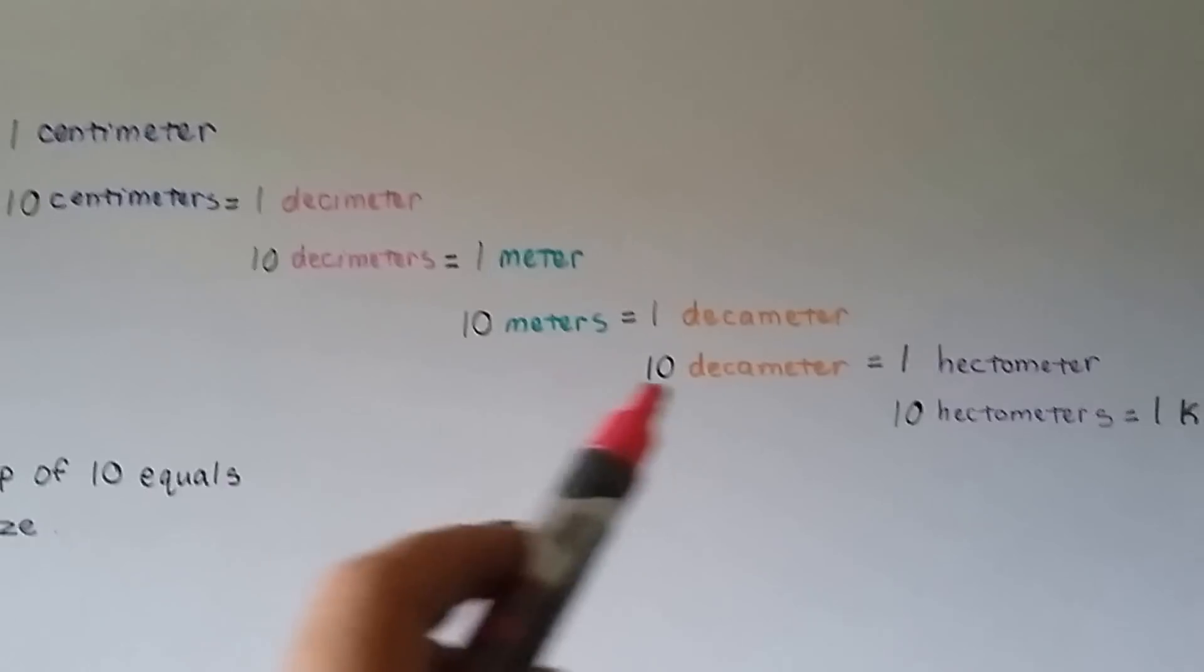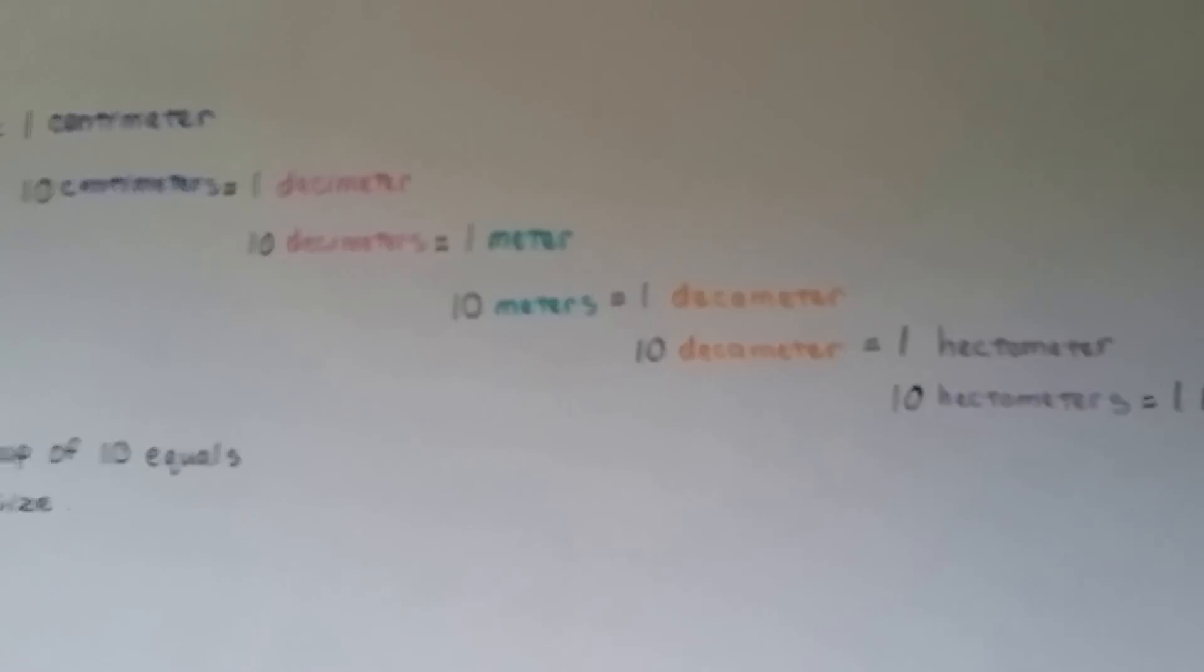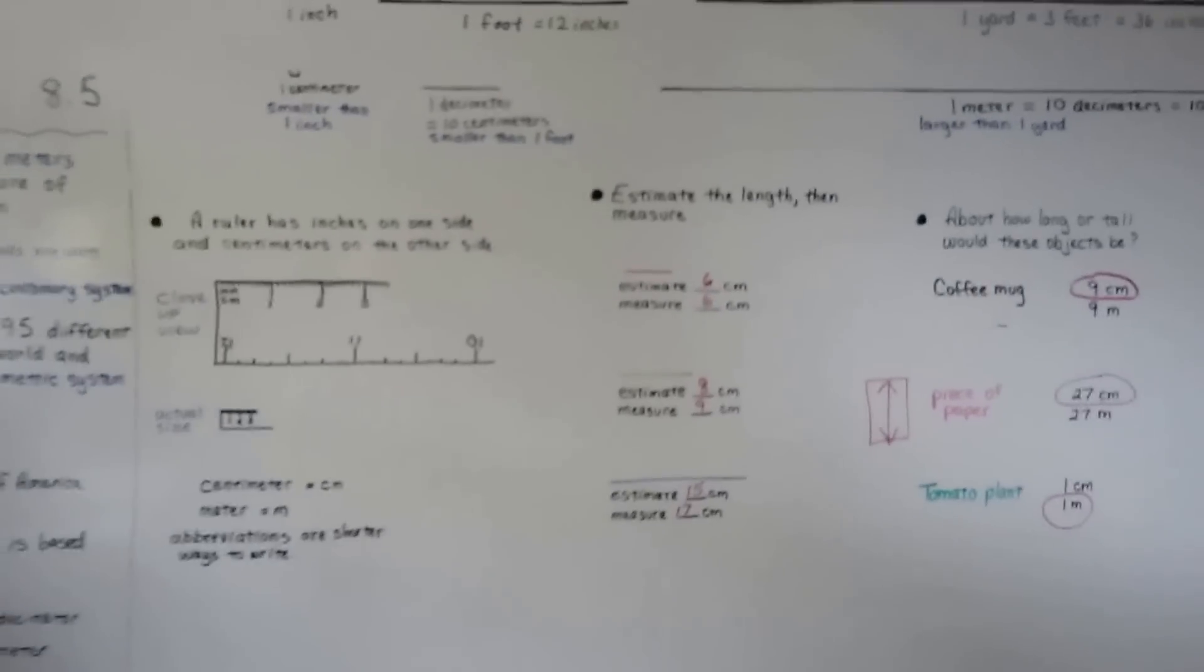See how it keeps changing to a new size for every 10? 10, 10, 10, 10, 10. That's why the metric system is easier. It's not like our measuring system of 12s and stuff like that. It's all based on 10.